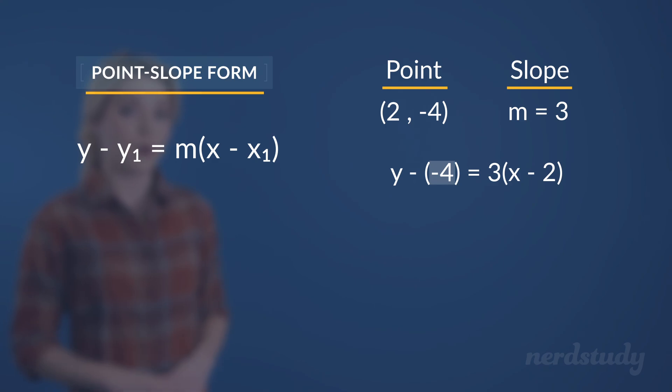Notice how our -4 gets inputted as a negative number. Once we simplify the subtraction of this negative number, it becomes no different from the addition of 4. So, there is our equation in the point-slope form.